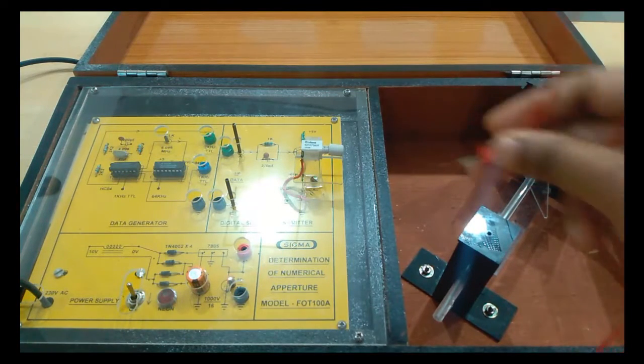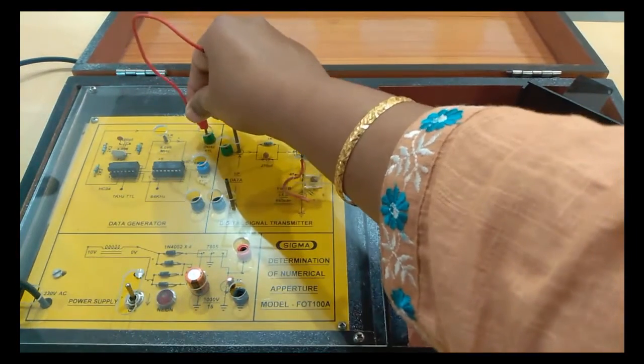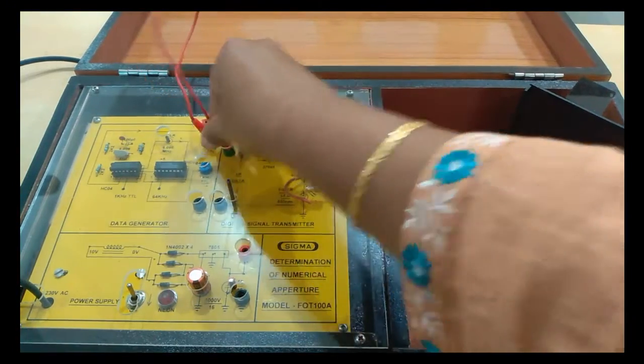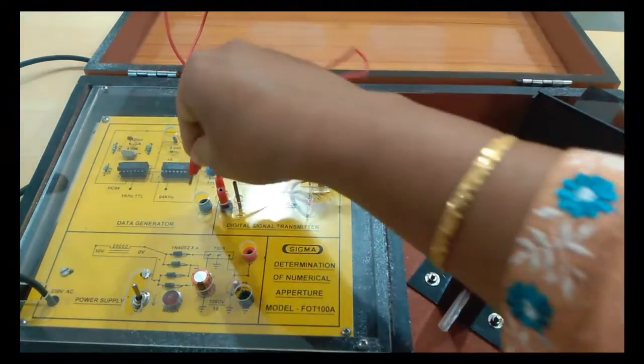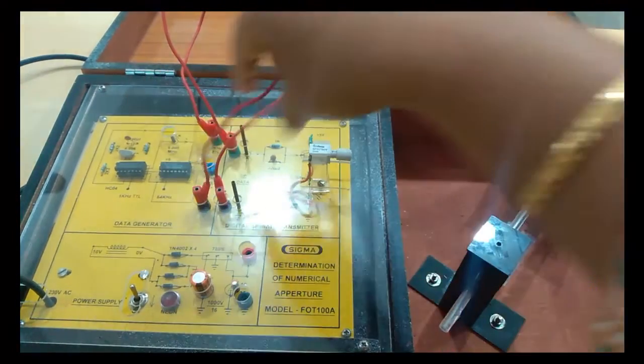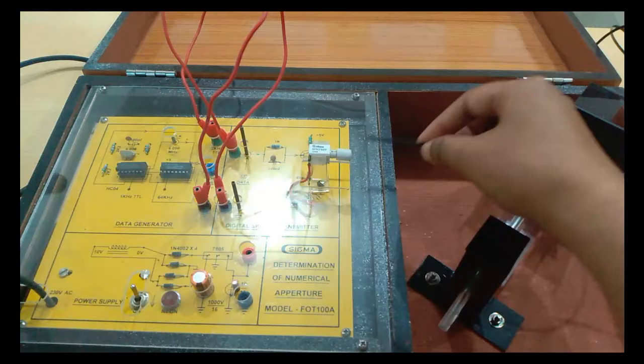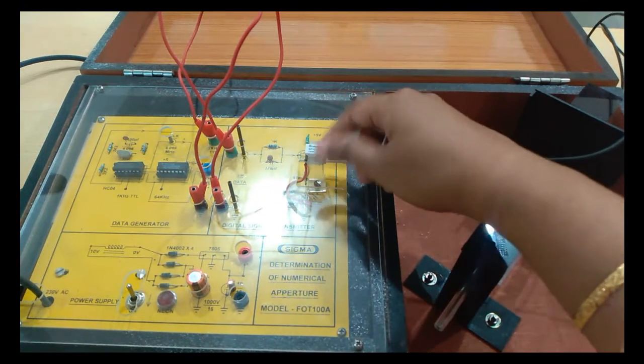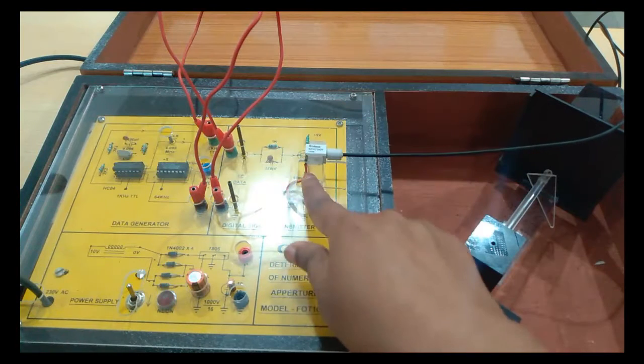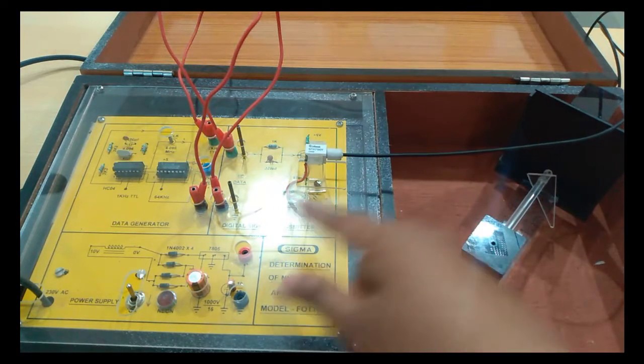We are going to choose first 2 kHz input, then ground, fiber. This is a fiber connector. LED 660nm.